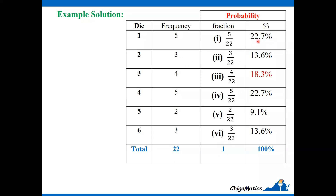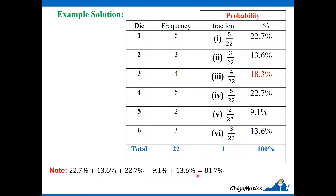Now converting the fractions to percentages. Note that 22.7% is not an exact number — it is an approximation. All these percentages are approximations. The value 18.3% written in red has a specific meaning: you add the other five percentages to get 81.7, then subtract from 100 to get 18.3. This ensures that when all values in the last column are added, the total is 100.